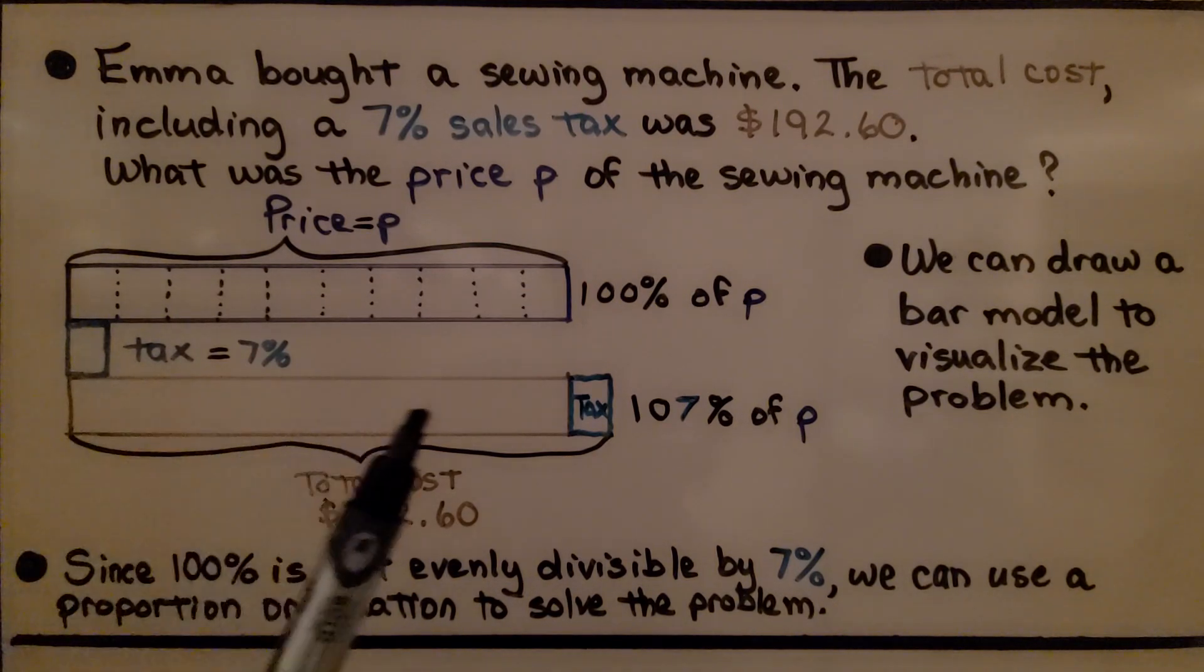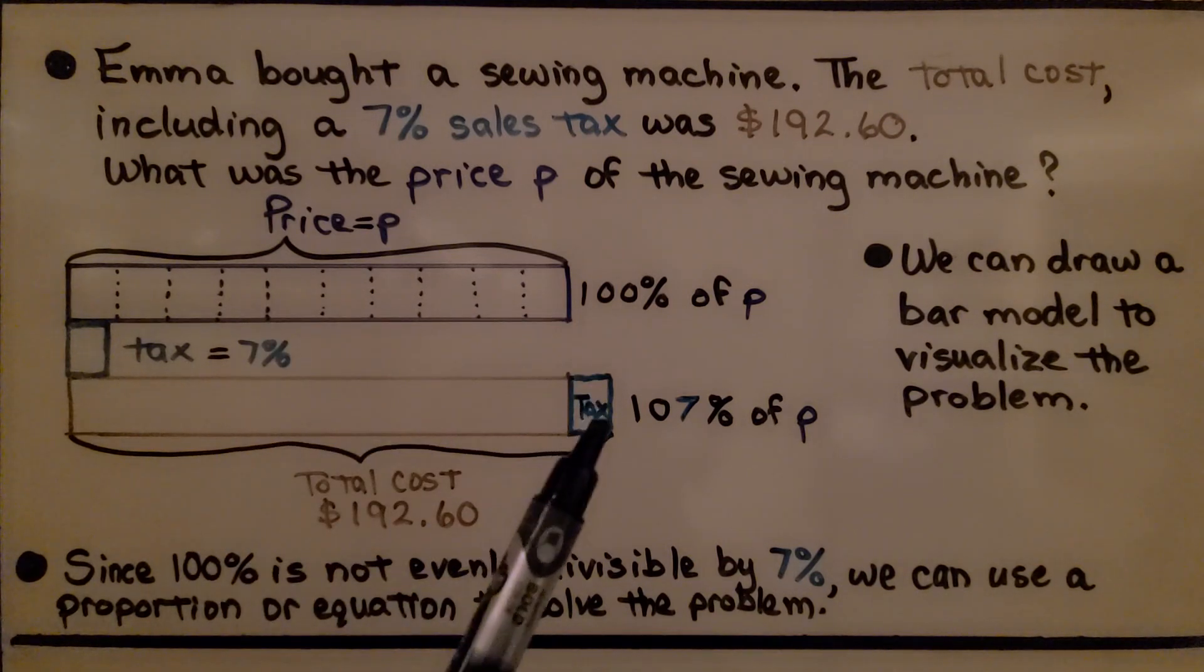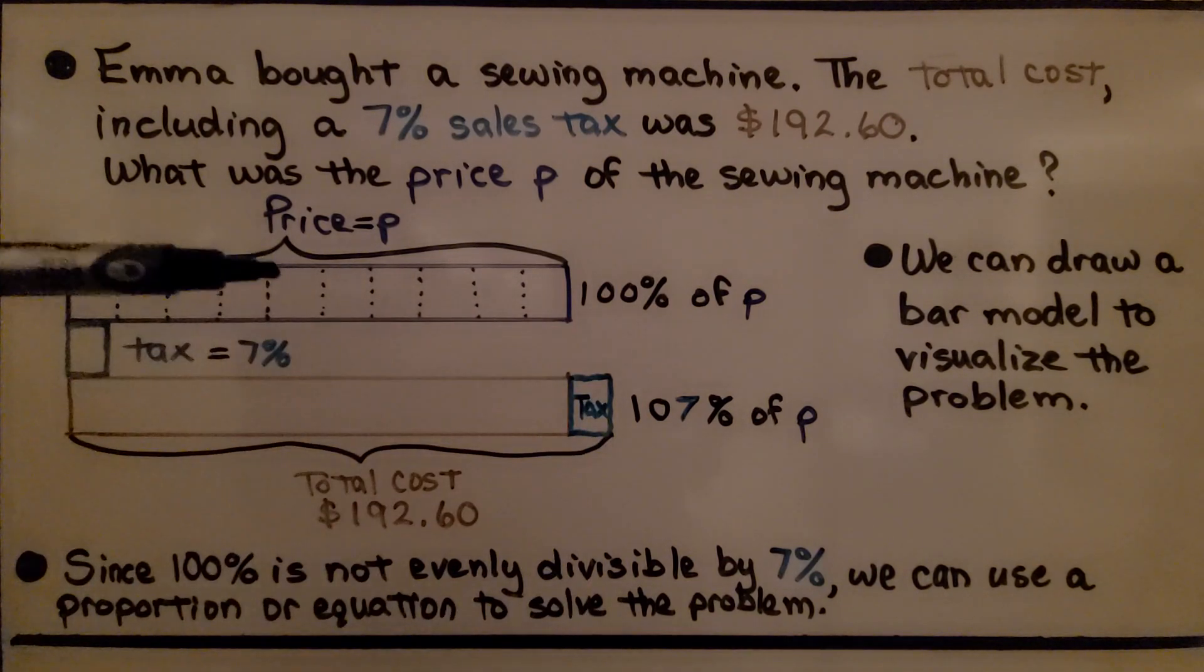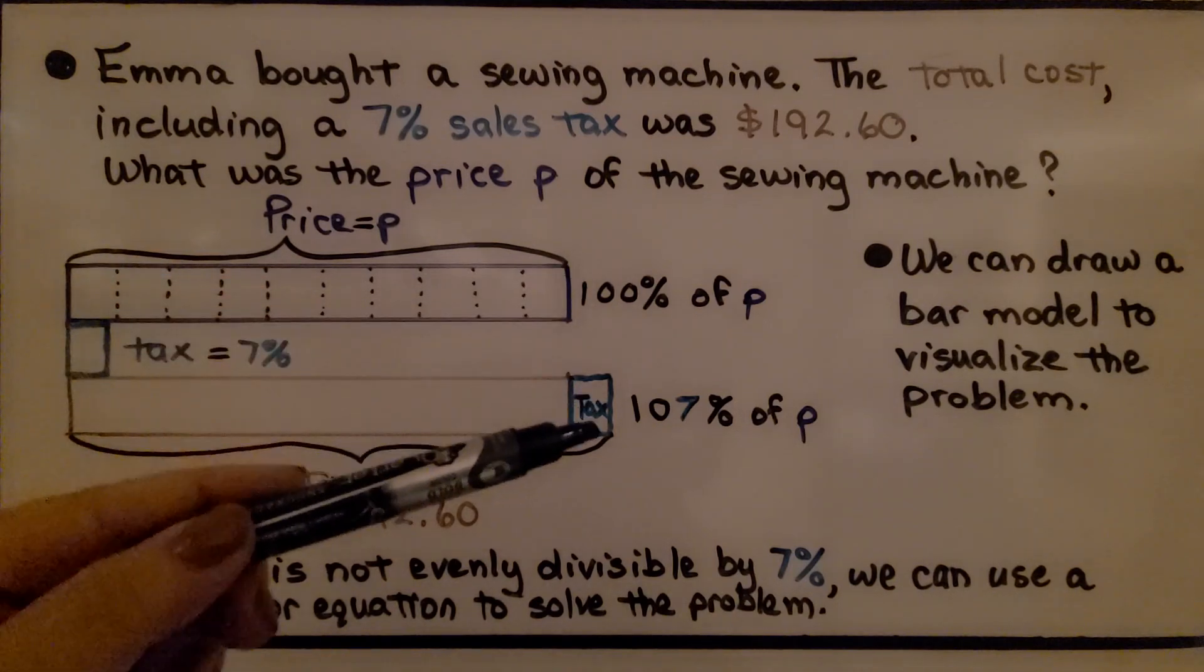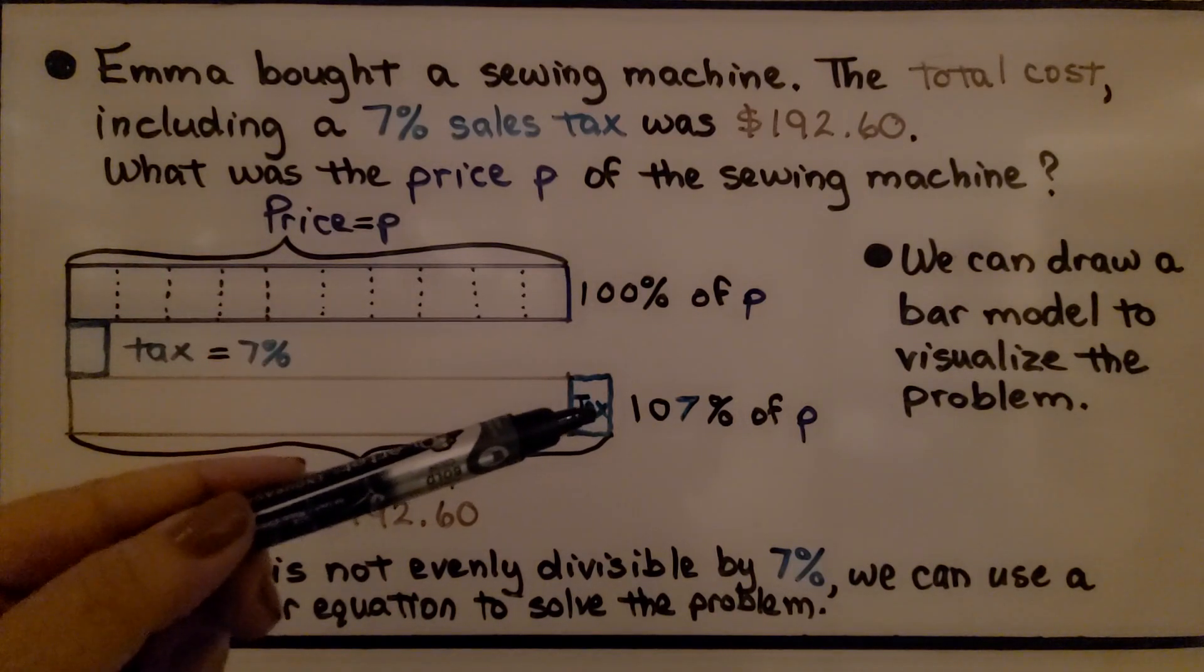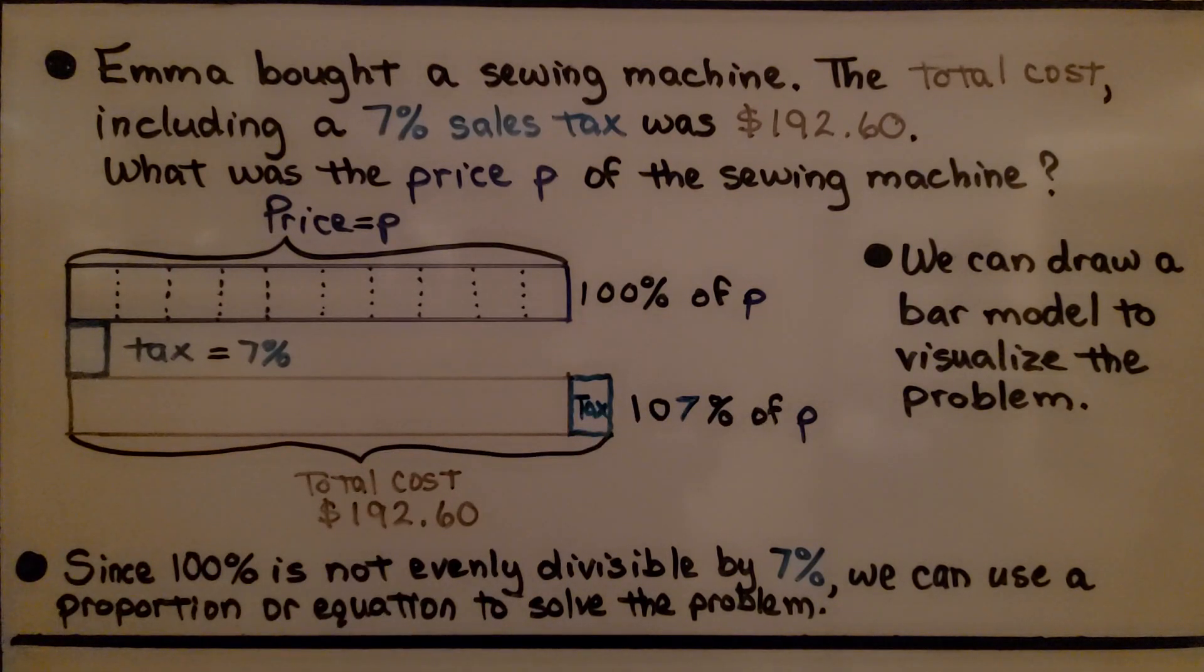For the total cost, we have the same length as the price plus that little piece, that little 7%. If this price is 100%, then with the tax, we're at 107% of P, of the price. So we can draw a bar model to visualize the problem. And since 100% is not evenly divisible by 7%, we can use a proportion or equation to solve the problem.